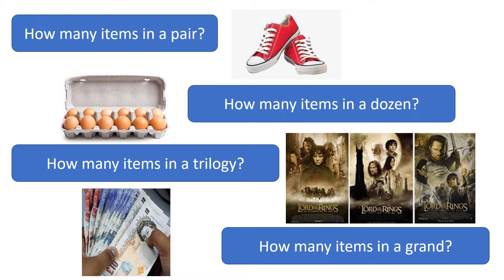And if I said to you I'll give you a grand, you would be looking hopefully for one thousand pounds. So these words pair, dozen, trilogy, grand, they just are evocative of a certain number. They mean a certain number to us all. And mole is exactly the same.